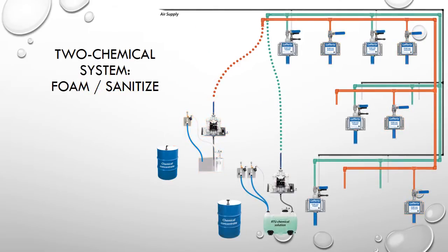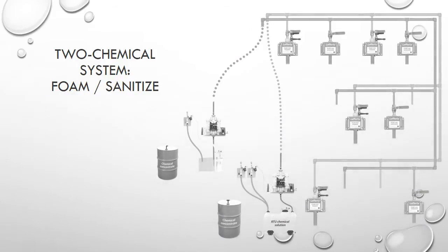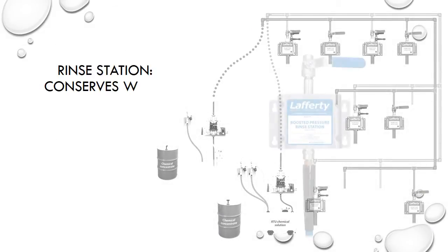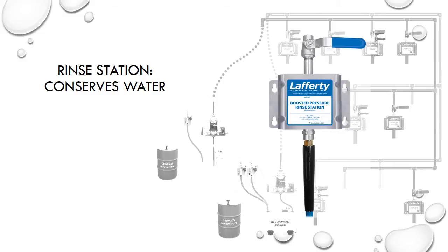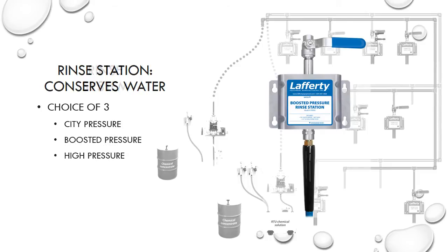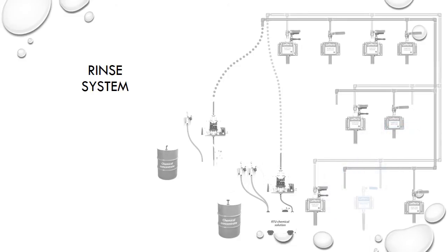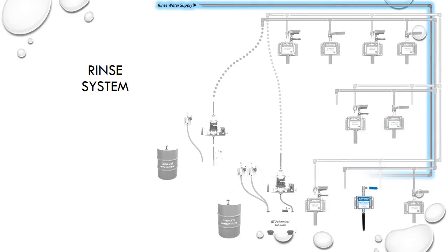A two-chemical cleaning and sanitizing system could look something like this. Often a companion rinse system will also be desired. For rinsing, a rinse station may be used. Rinse stations help conserve water and provide rapid rinsing capabilities. Rinse stations are selected to match the plant water system pressure — city, boosted, or high pressure. A rinse station should be part of a comprehensive central cleaning and sanitizing system.